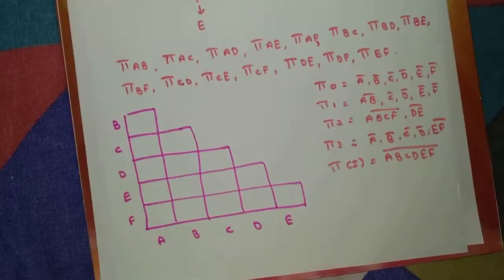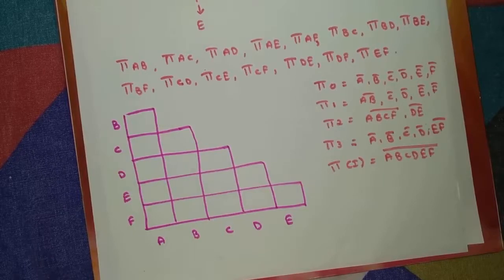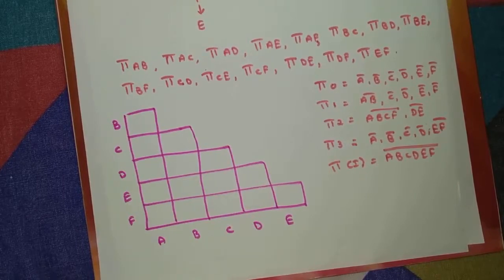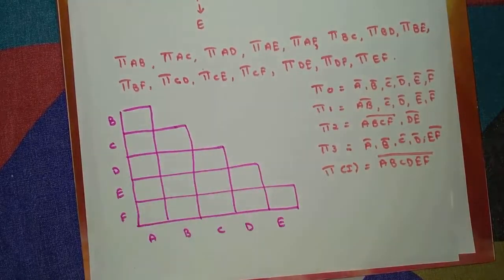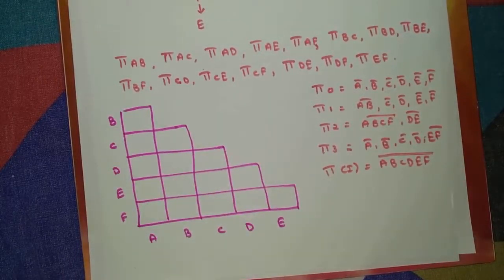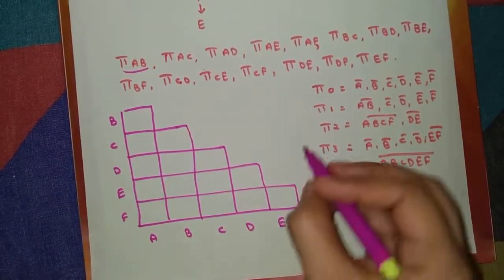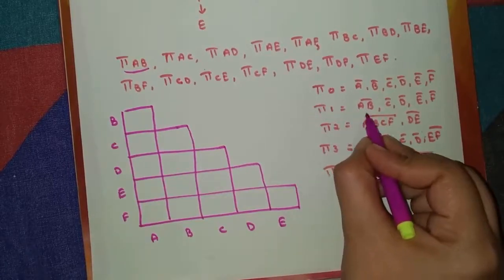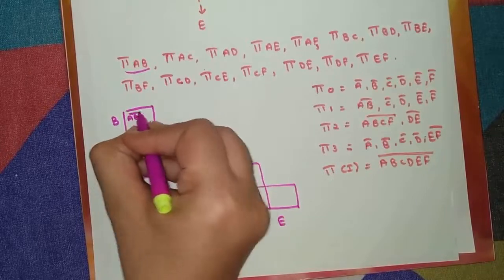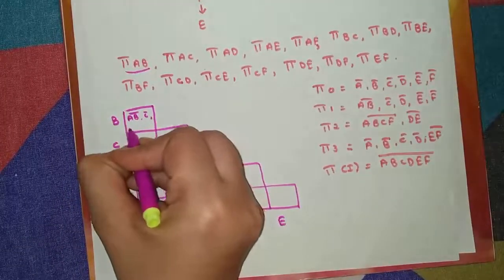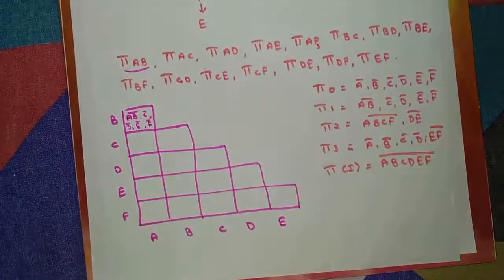Now we will draw a merger graph. In a previous video session I explained how to draw a merger graph — if you don't remember, go to that session on merger graph and merger table. Now we fill the table — we compare A and B. The answer for pi(AB), which we already calculated, was pi_1: {AB | C̅ | D̅ | E̅ | F̅}. Write down the same answer: AB̄, C̄, D̄, Ē, F̄.